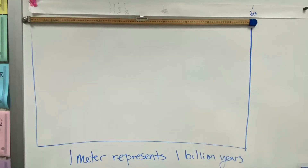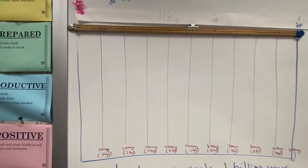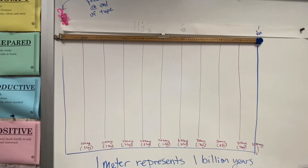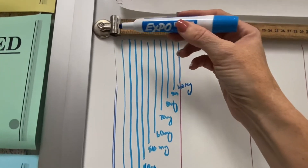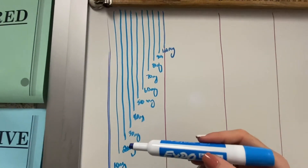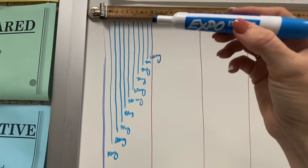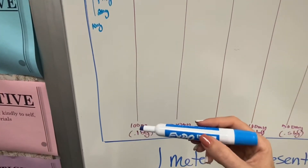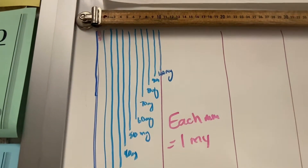We can see here that one meter represents a billion years in our model. Each of the larger lines — every 10 millimeters — is going to represent 100 million years, so we have 10 sets of 100 million years giving us a billion years. The smaller divisions between each one-centimeter mark represent 10 million years — so two is 20 million years, three is 30 million years, all the way until 10 tens equals 100 million years. Finally, each individual tiny millimeter stands for one million years.